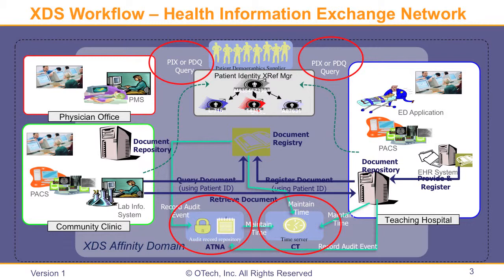All the way on the top, we see the PIX or PDQ query for querying. Because what happens if, on the left side, we have a community clinic, and the physician in the community clinic wants to query for the document — it can go back to the document registry, find the information, and query the document using a patient ID. So the patient identity cross-reference manager is used to cross-reference the patient ID. The registry is used for registering certain documents. Then the document can be retrieved after the patient IDs are properly cross-referenced and after we find out that the registry has certain documents available for that particular patient.